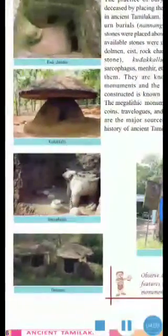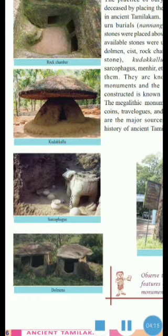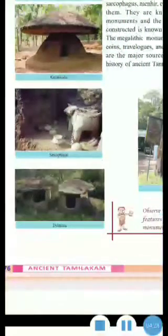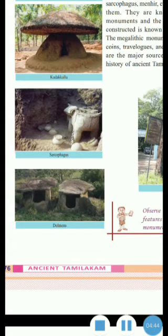Look at the picture — here you can see a rock chamber and kudakal, the shape of the stone placed on the earth. Then what is next: sarcophagus. These are known as megalithic monuments. What are megaliths? Pre-historic stone monuments are called megaliths.